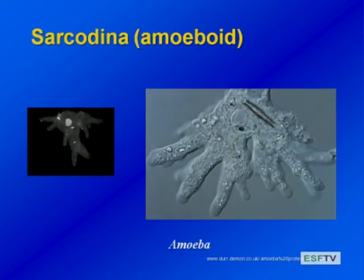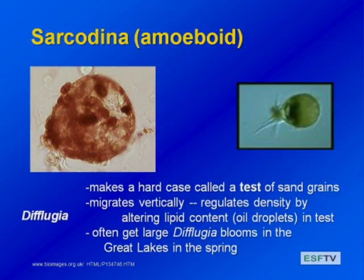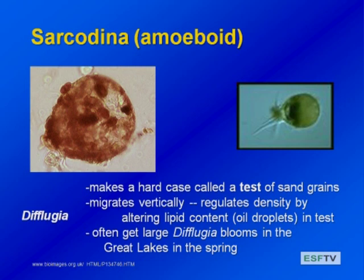Then we have amoeboid forms. You may think of these as living on surfaces, but there are some that live in the open water. They engulf prey with their pseudopods. In freshwater systems including the Great Lakes, there are some amoeboid forms that make a little hard case — a test made of sand grains, sort of like a pelagic caddisfly. These sand grain cases protect the amoeboid form and they're able to migrate vertically by regulating their lipid content, becoming buoyant and going up and down in the water column, consuming small prey items.